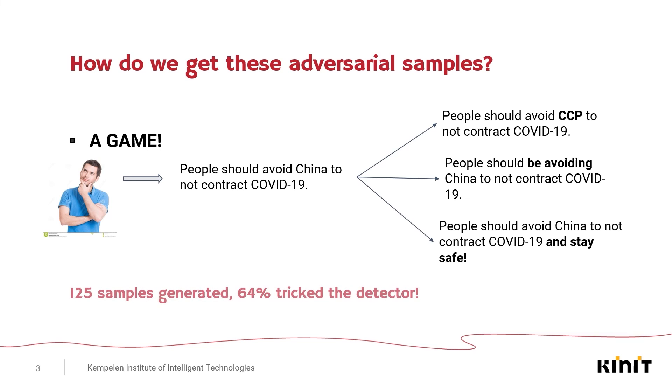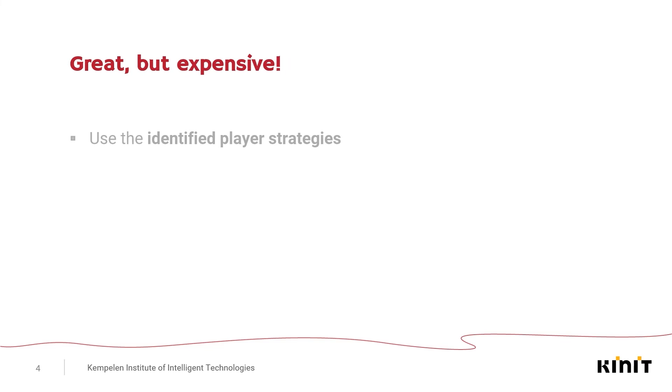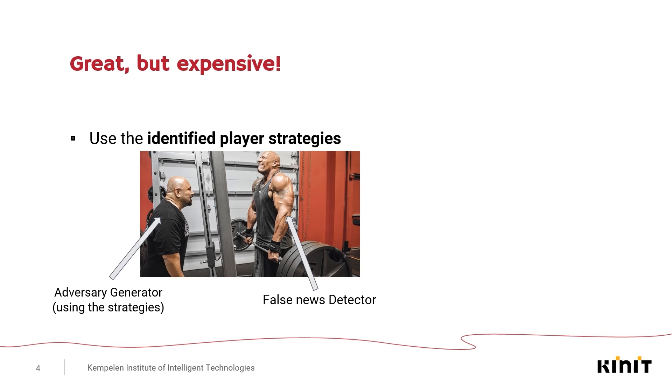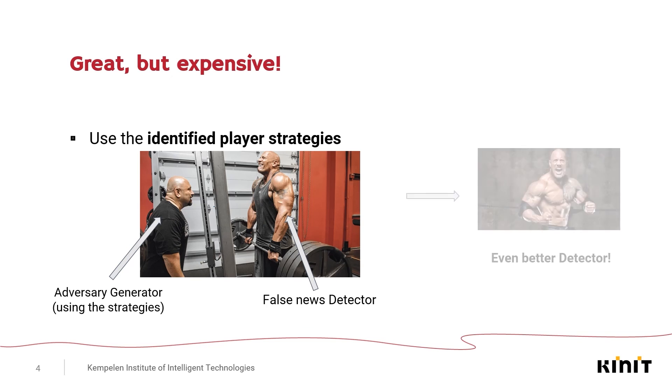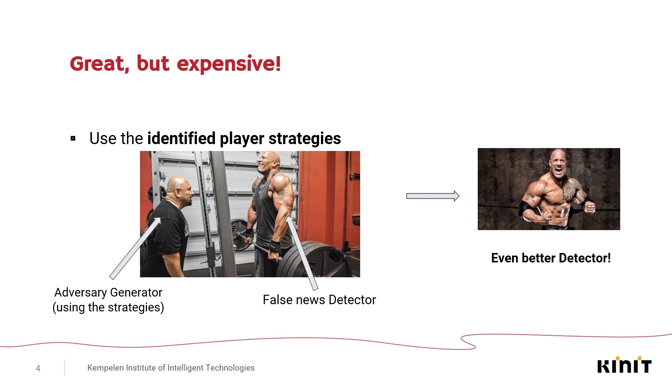In total, we have collected 125 samples, out of which 64 of them successfully tricked the given detector. Now as good as this is, it's kind of expensive. We don't want to use human labor for this task as it's really not reproducible. So what can we do about this? Well, we could use the identified player strategies for an automated adversarial generator. The job of this generator is to automatically produce these adversarial samples that are fed as training data to the given detector. As such, we will produce an even better false news detector.